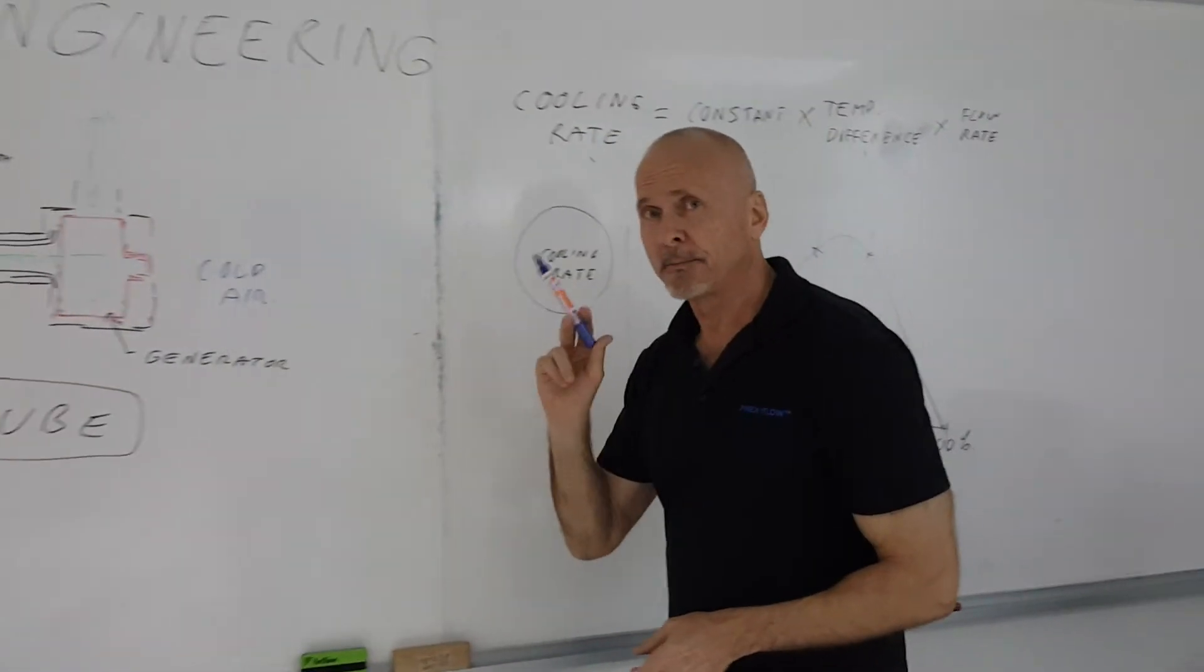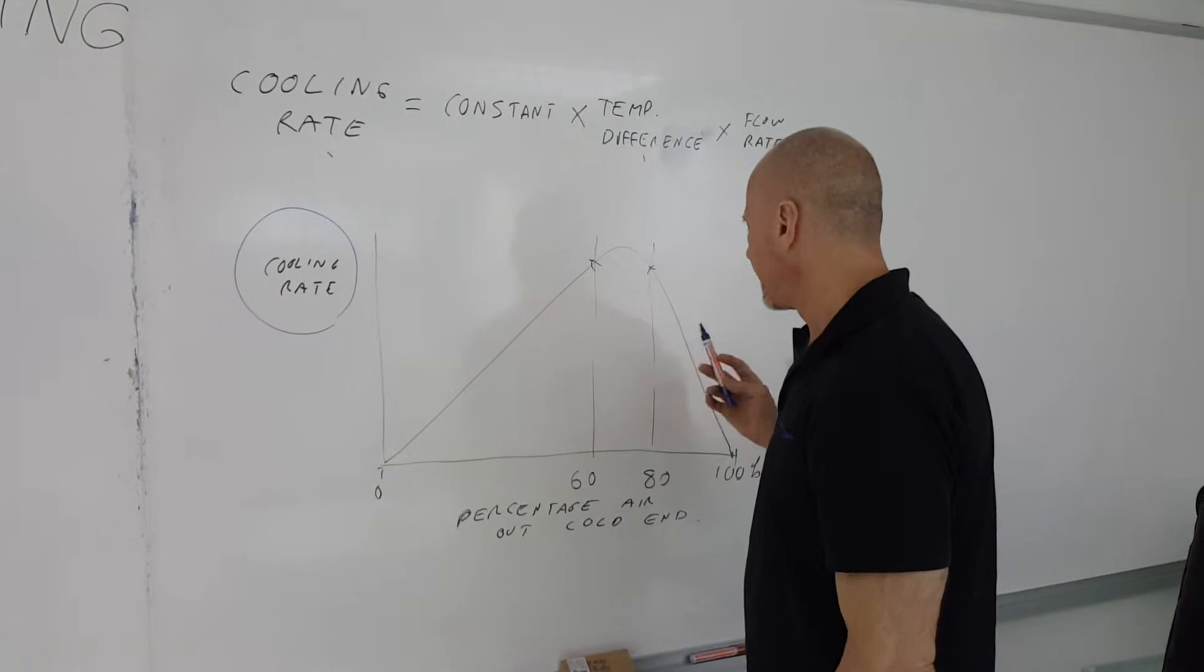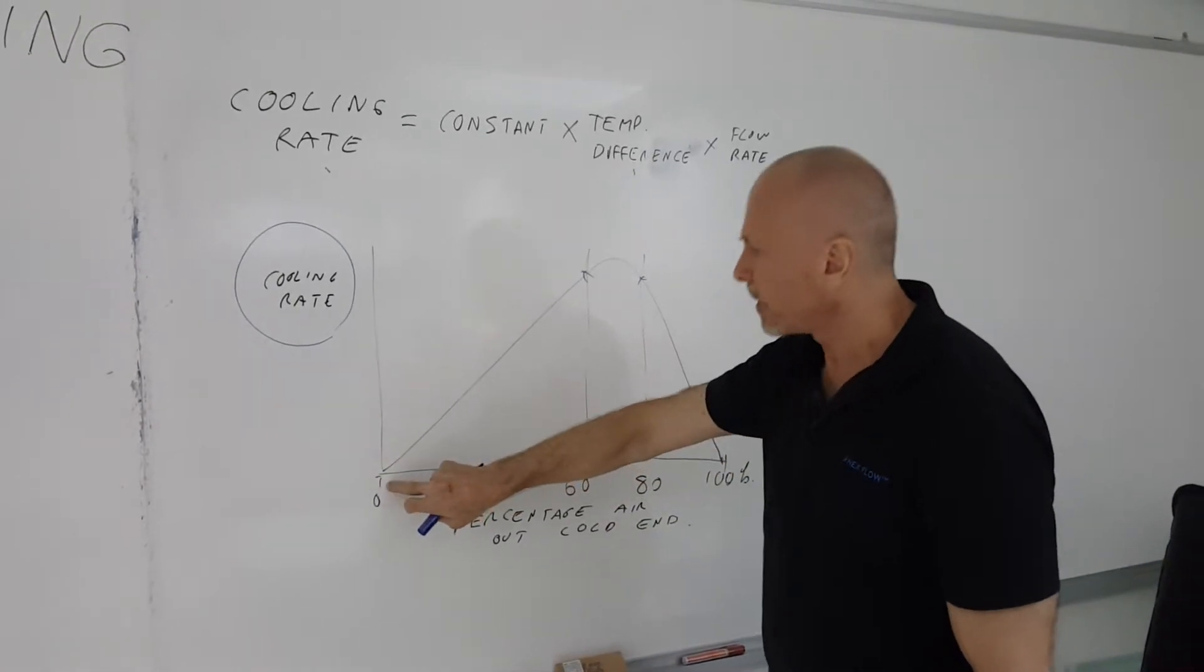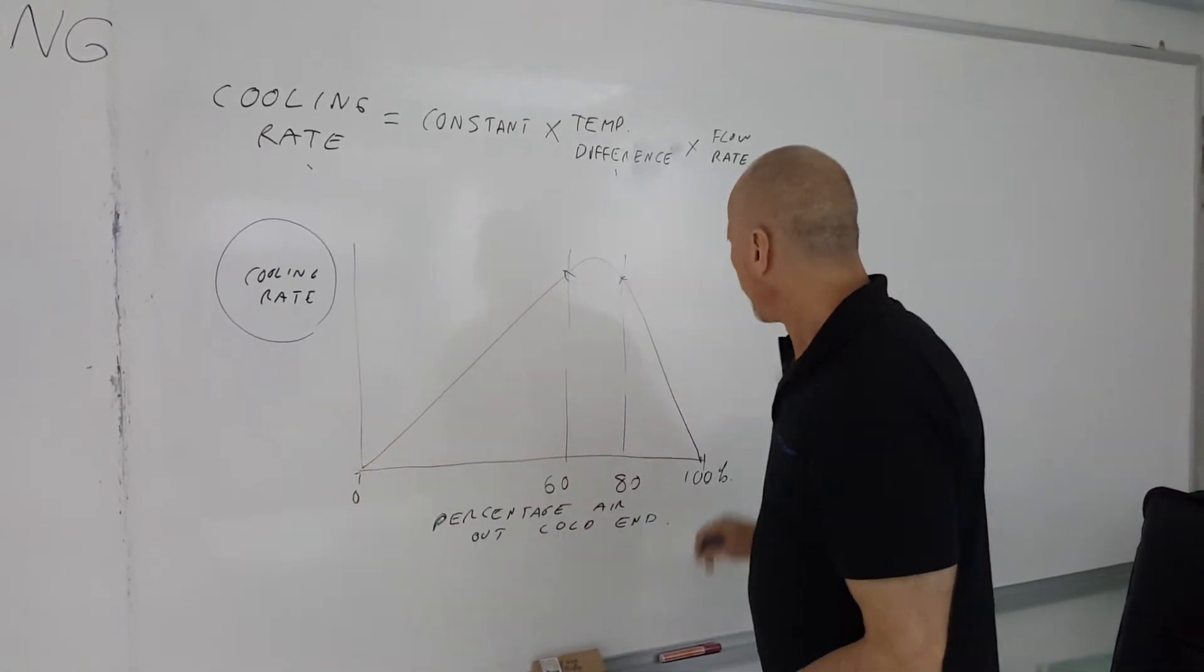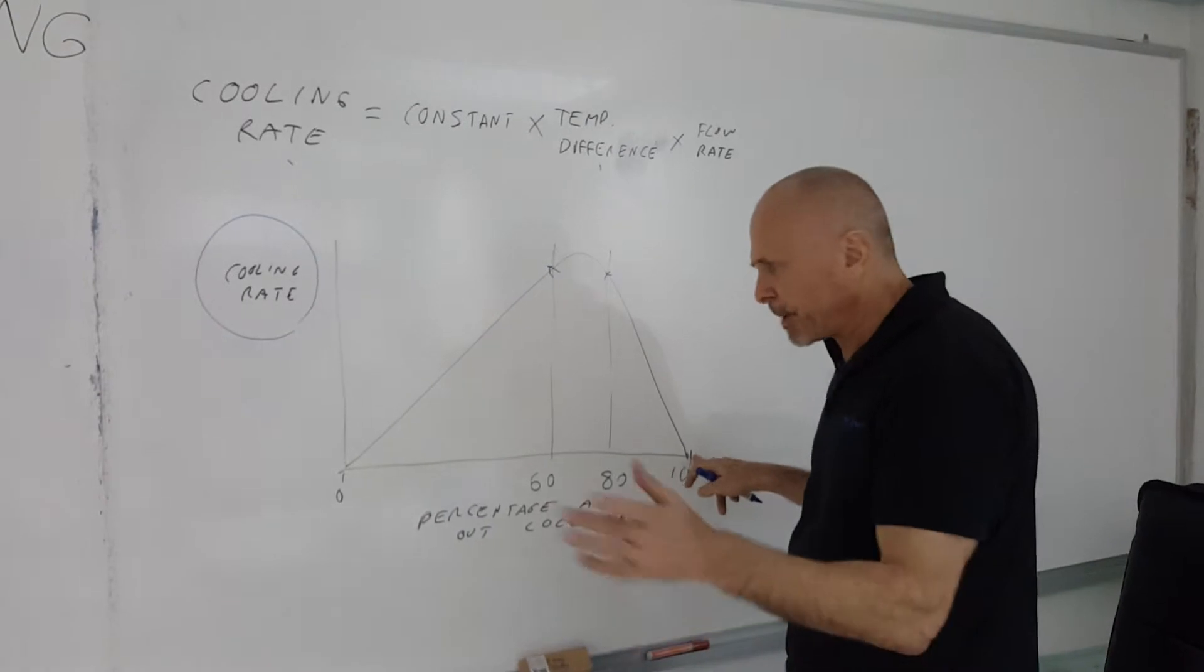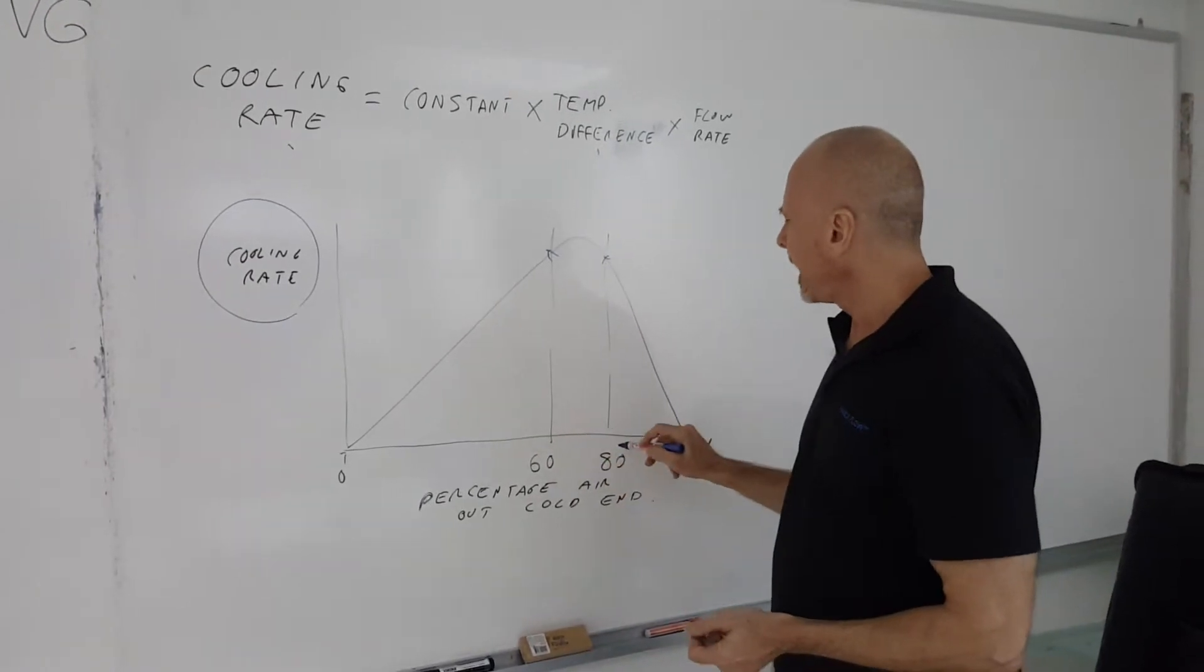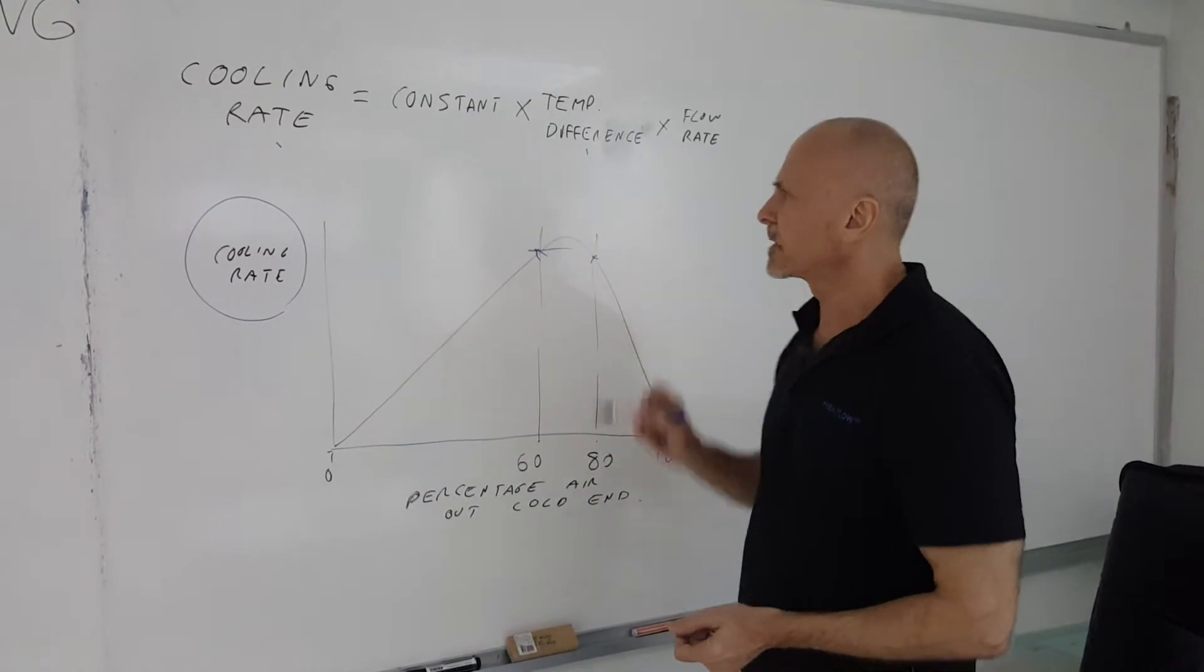We actually did a chart. We did a graph where we took a percentage of the air out the cold end against the cooling rate. If there's no air coming out the cold end, obviously it's no flow, you're going to have no cooling rate. If 100% of the air goes out the cold end, there's no spinning action on the other end. So again, you're not going to have any cooling effect.